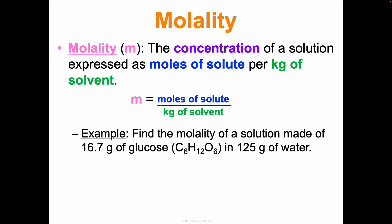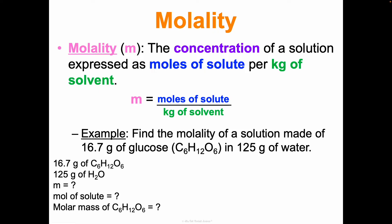We've read the problem. Now let's analyze: we have 16.7 grams of glucose - that's my solute - so I'll need to convert that to moles. We have 125 grams of water - that's my solvent - and I need that in kilograms. We want the molality. To find it I need moles of solute, so I'll need the molar mass. And I need kilograms of solvent, so I'll convert grams to kilograms. A couple of small steps, but it's not a crazy equation.